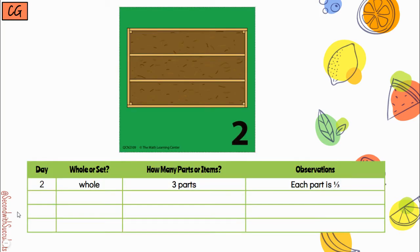Let's add this information to our calendar grid observation chart. So it's day two. This is still one whole. This one has three parts, and each part is one third.